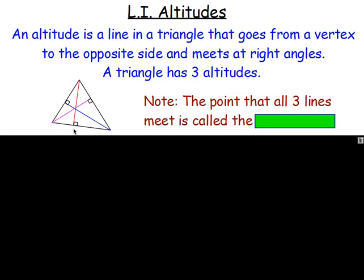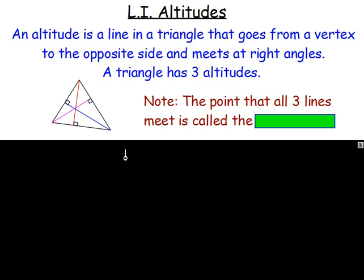If you imagine this triangle here, you can see the red line from the vertex goes across to the opposite side and meets at a right angle. The blue line goes from that point to the opposite side, meeting at a right angle. The pink line goes from that vertex to the opposite side, meeting at a right angle as well.